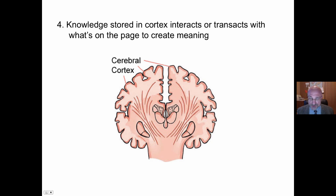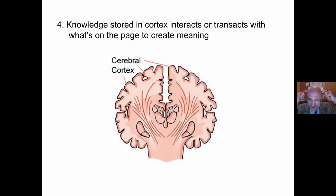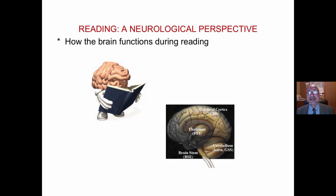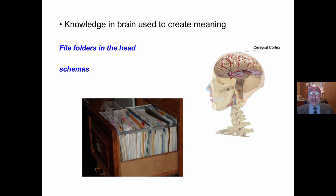The knowledge stored in our cortex interacts or transacts with what is on the page. I can read and understand things about reading quite well because there is lots of relevant knowledge stored there. But try to read and understand stuff about financial analysis — not so much meaning. We use what is in the head. From a neurological perspective, knowledge in the brain is used to create meaning during reading.